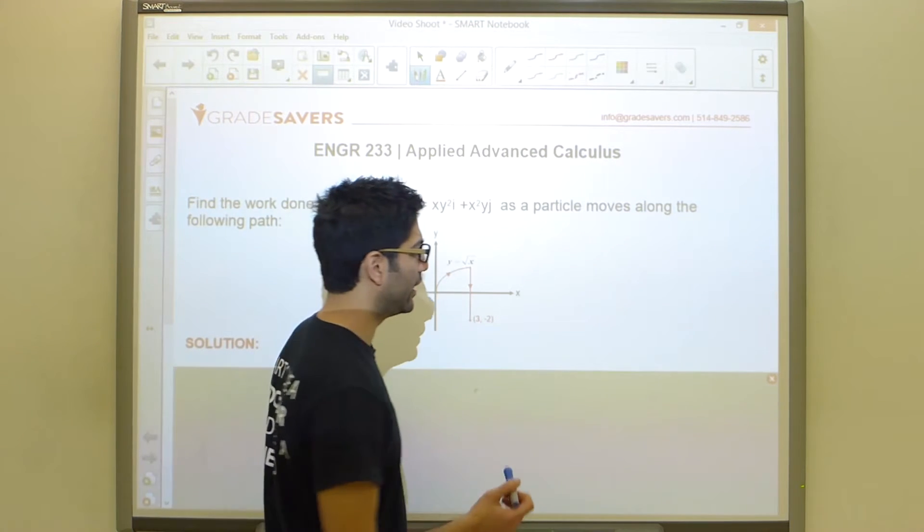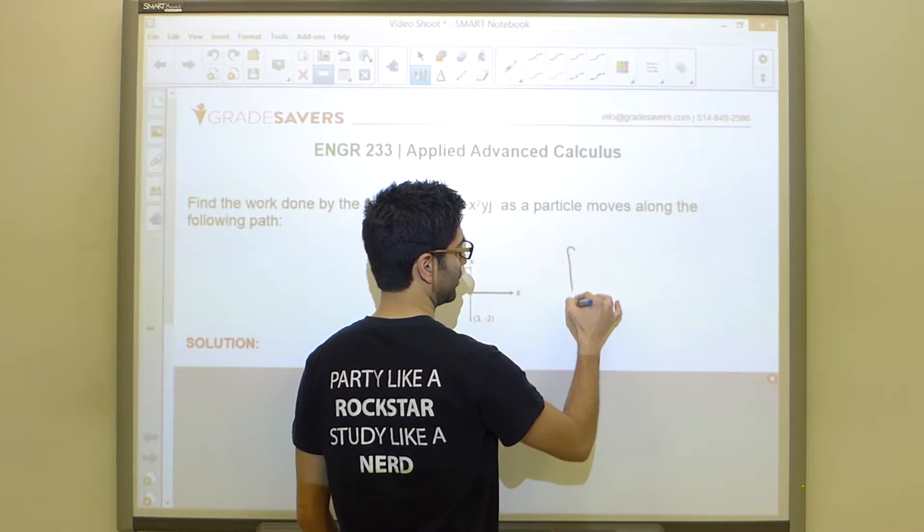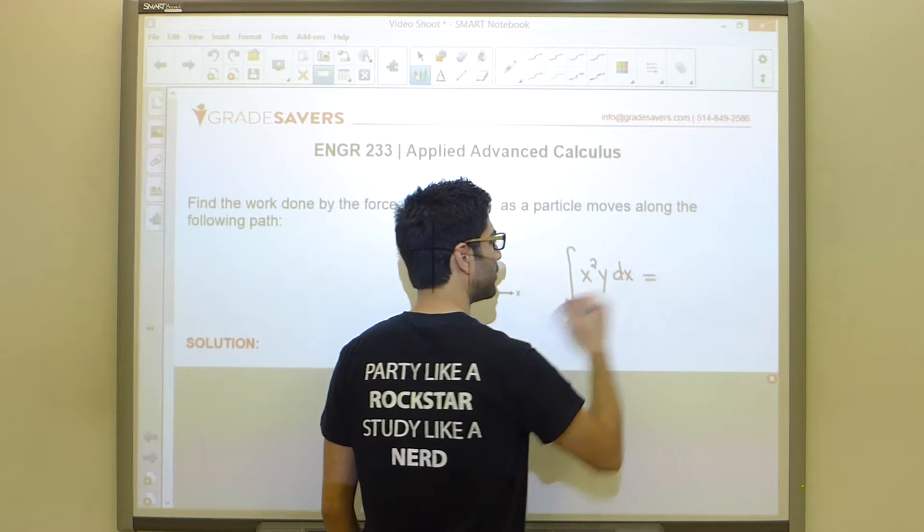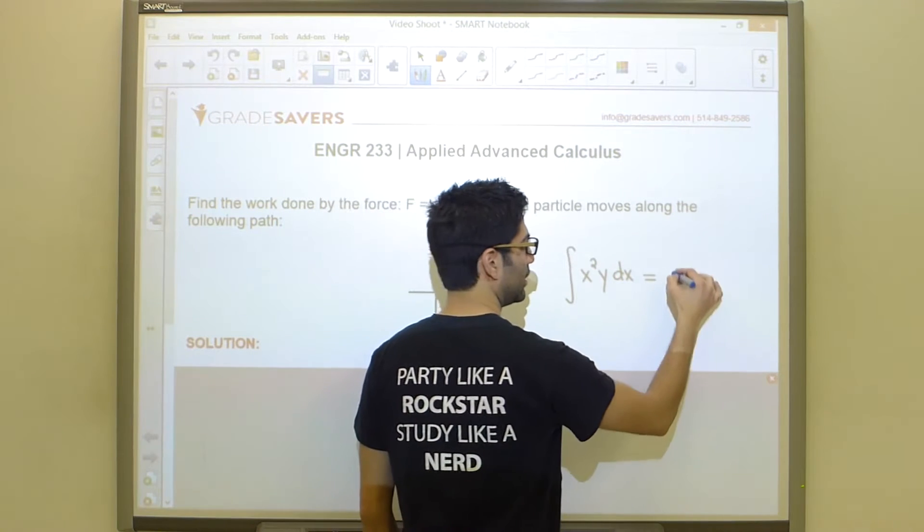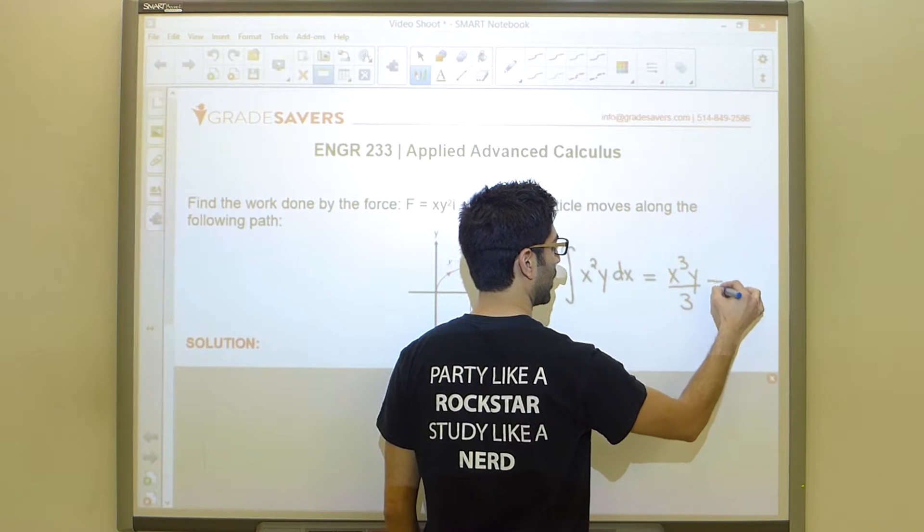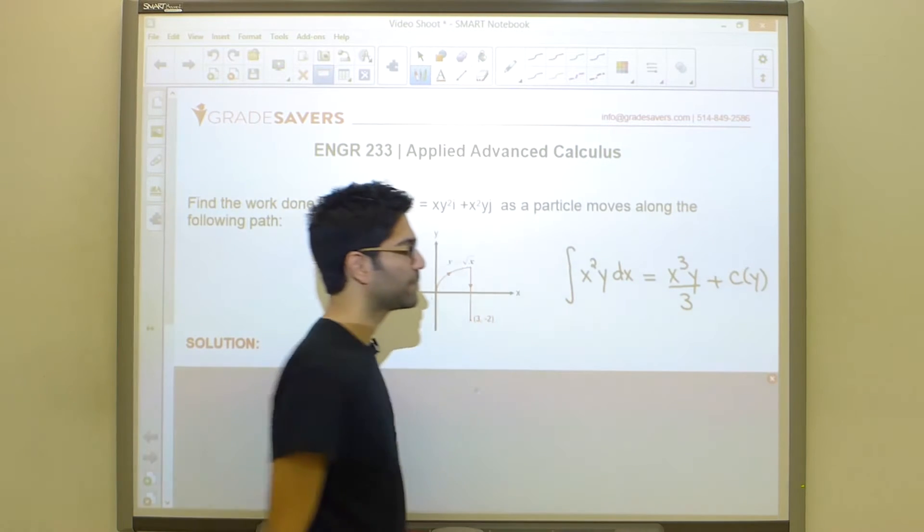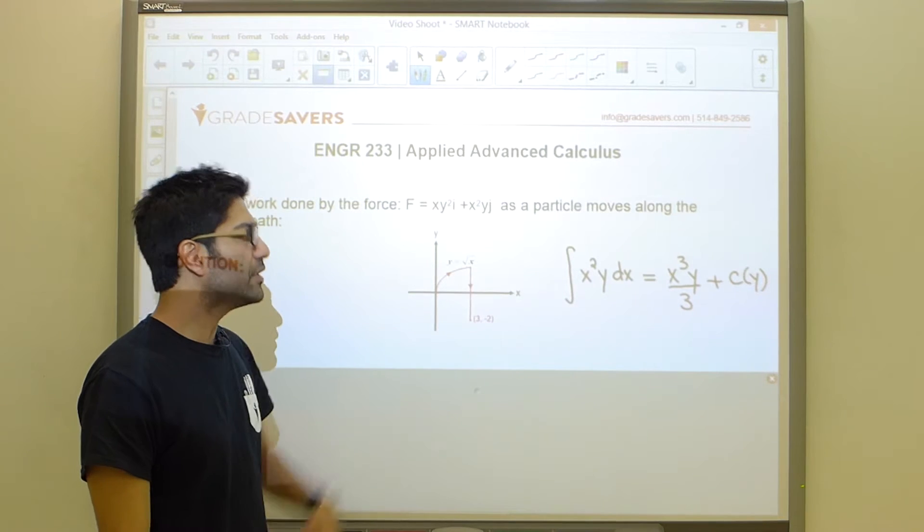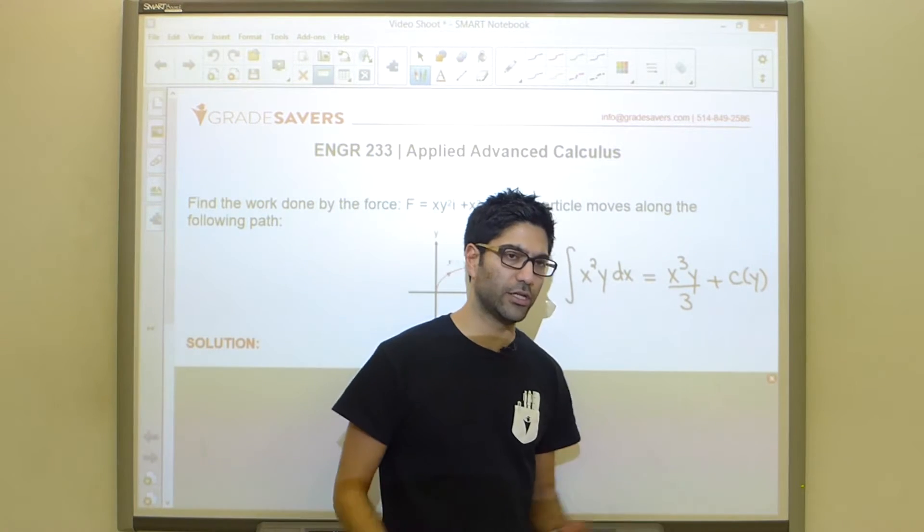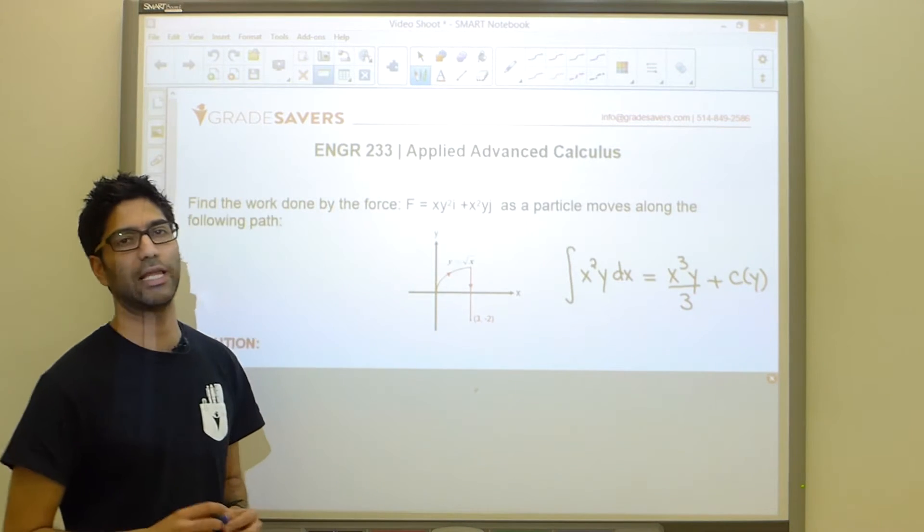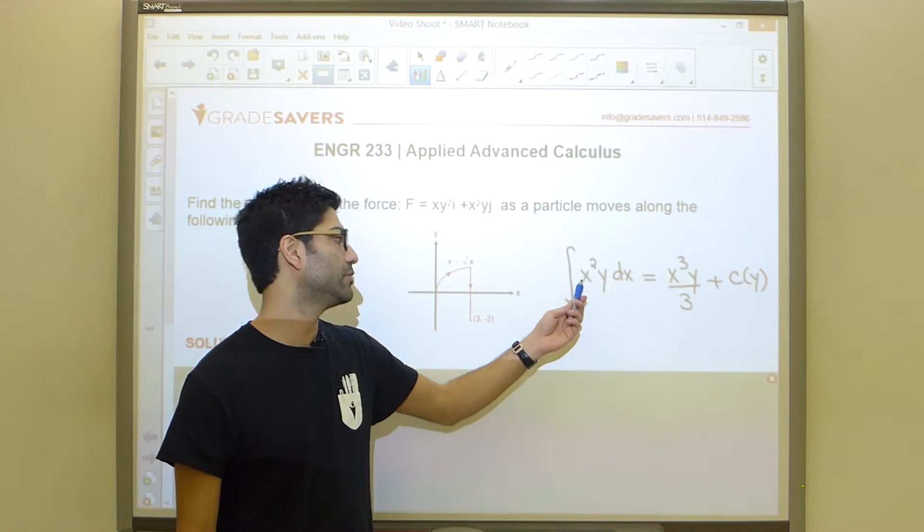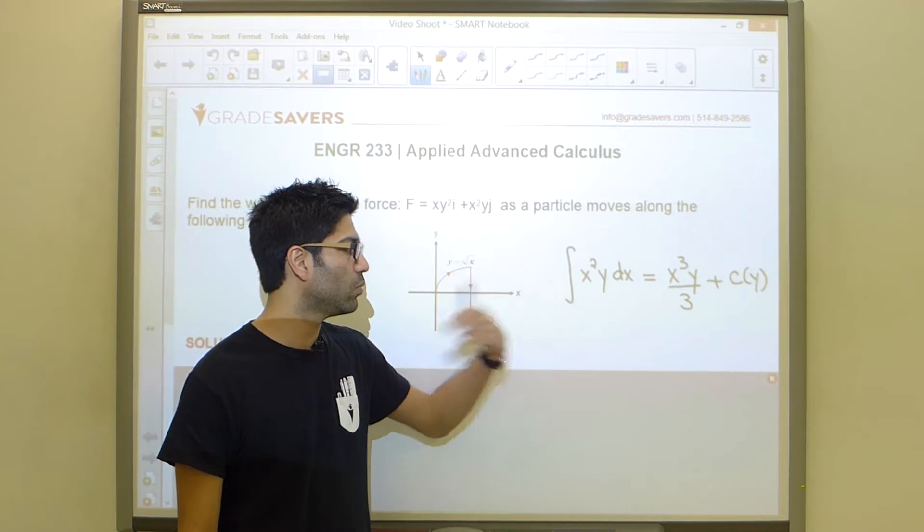If I was to ask you guys to solve a very simple integral, x squared y dx, most of you guys would give me an answer of x cubed y over three plus some constant that can contain perhaps some y's. Now, this is correct, but solving this integral in this fashion assumes one very important thing and that is that y is constant when it comes to x, right? With respect to x, y is a constant.